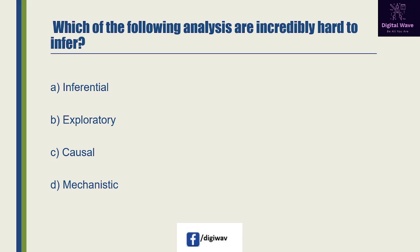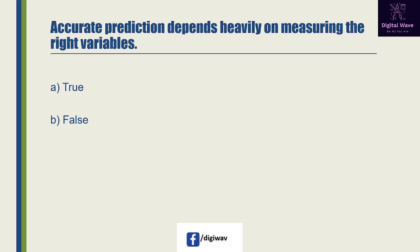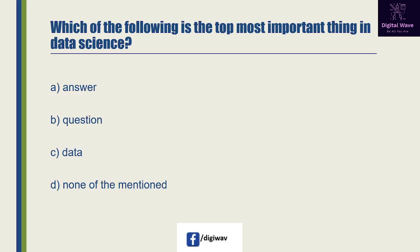Next question: which of the following analysis are incredibly hard to infer? Option A is 'inferential', option B is 'exploratory', option C is 'causal', and option D is 'mechanistic'. The right answer will be D, because mechanistic analysis are hard to infer except for simple situations. Next question: accurate prediction depends heavily on measuring the right variables. This statement is true, because prediction is very hard especially for future references.